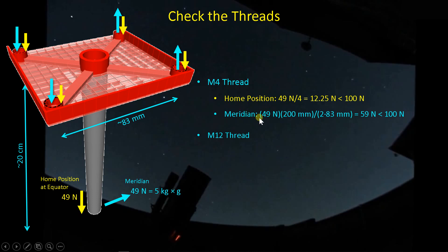On the meridian, now we have 49 newtons here times the moment arm, which is this length here, and divide by two because we have two screws, and divide by 83 millimeters, which is the spacing between these two threads here, the compression side and the tension side over here. And we come up with 59 newtons. A couple of things here. 59 is much larger than 12, so clearly the meridian loading case is much more important from a design perspective than the home position loading case. But once again, we're still well below 100 newtons for 10 kSI yield stress.